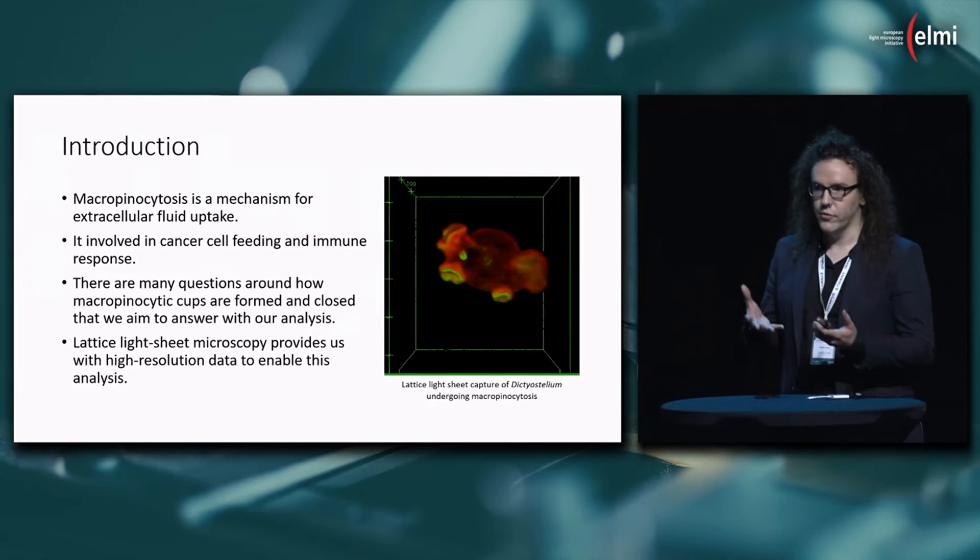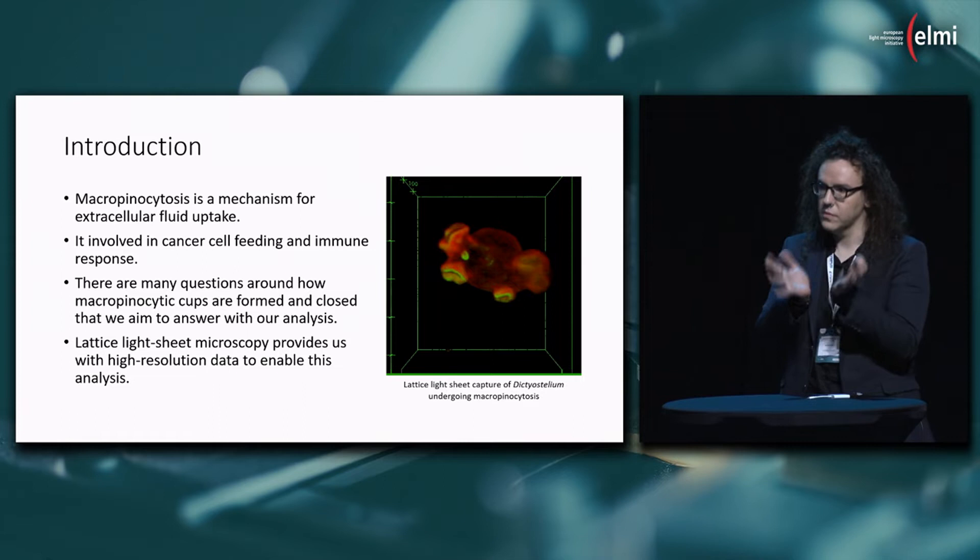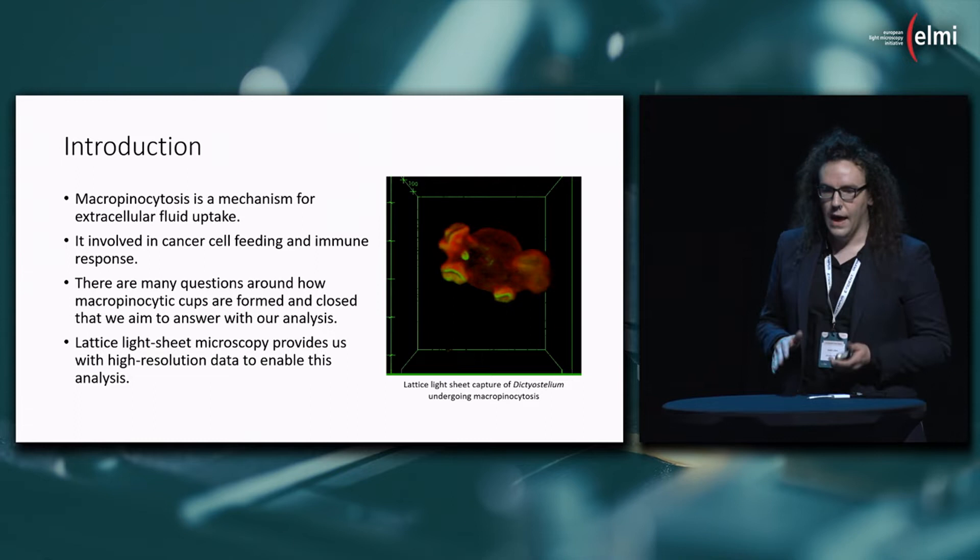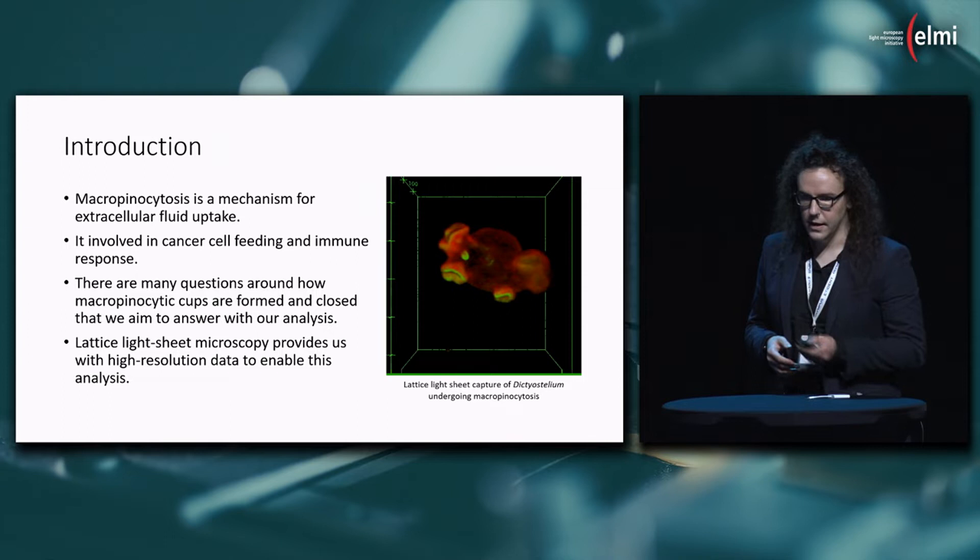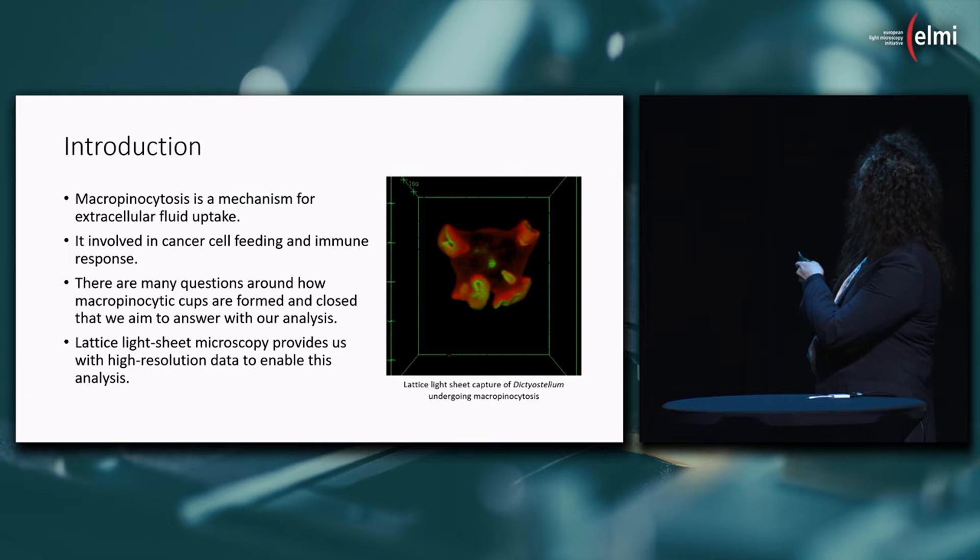I'll start off by just explaining what macropinocytosis is, and it's basically where cells drink. They uptake fluid into these cup-like structures which we call cups, conveniently, which they then close off and pull fluid inside the cell. And here is an example, this is a Dictyostelium, and you can see these cups. They come in and then they close off.